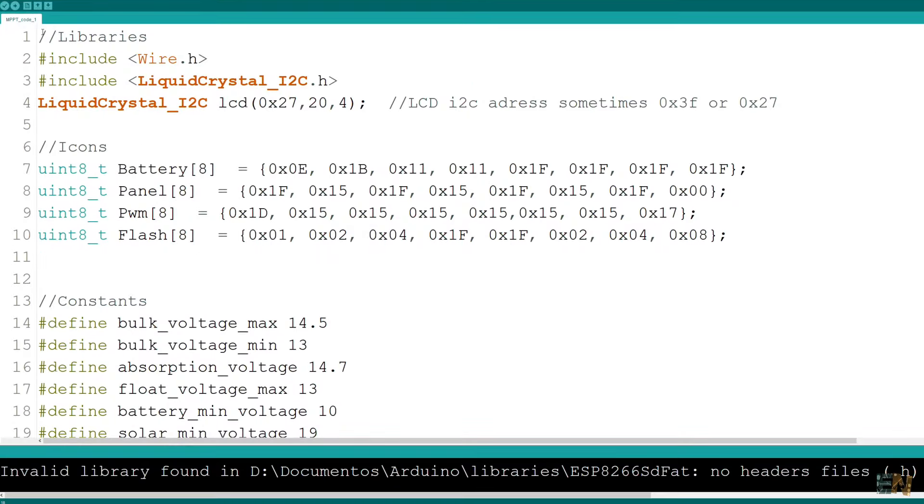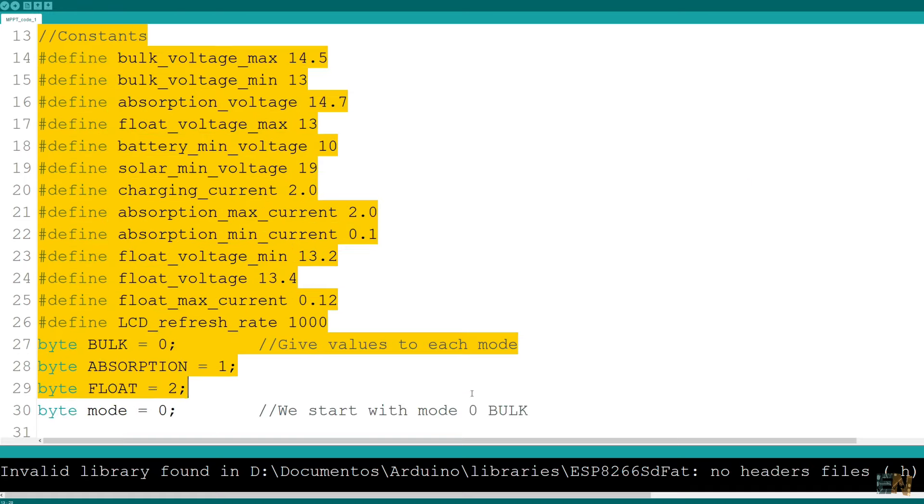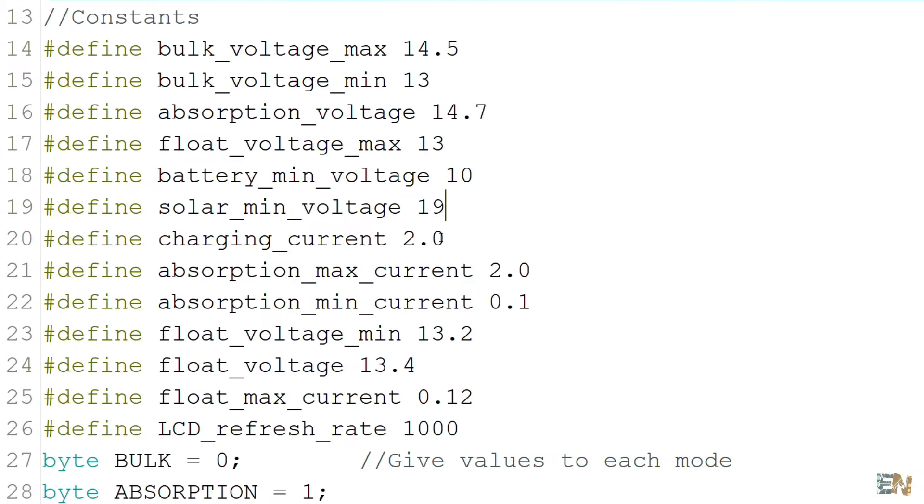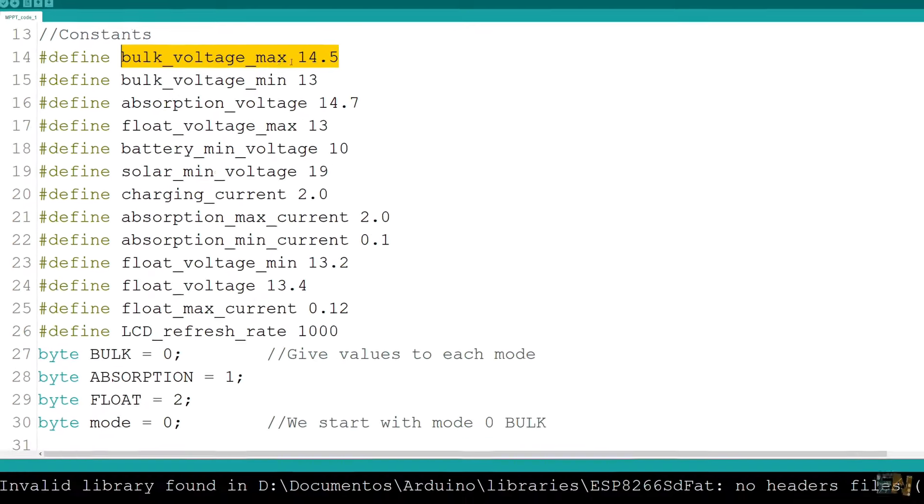We start the code by importing the LCD libraries and also creating the icons for the display. Then I define all the constants in the code. If you have a battery with different specifications, you will have to change these values here. For example, I have a current limit for my battery of 2A and have also set the bulk voltage to 14.6.